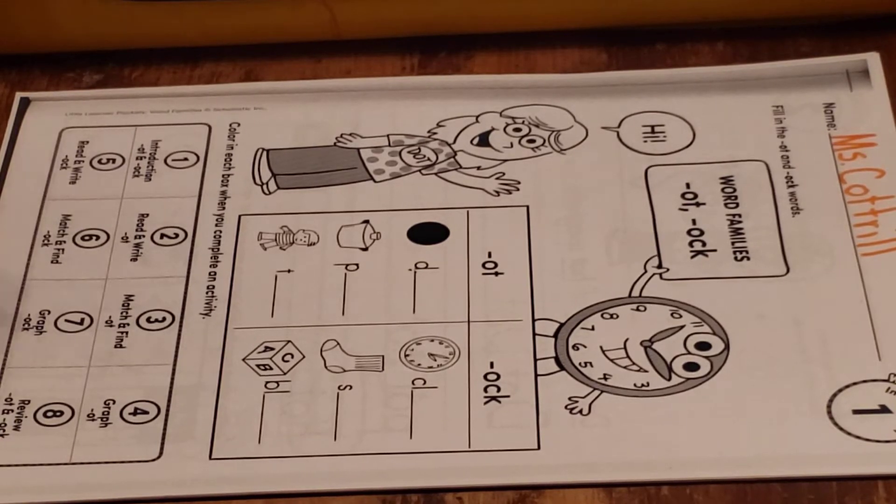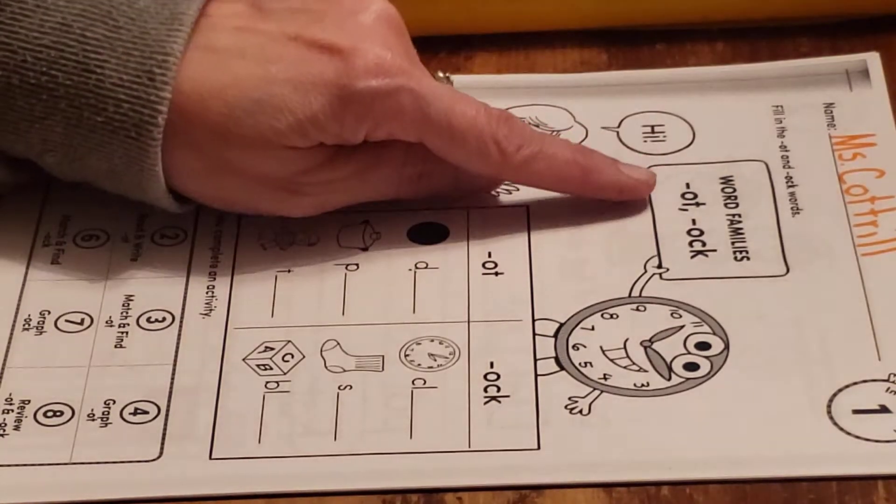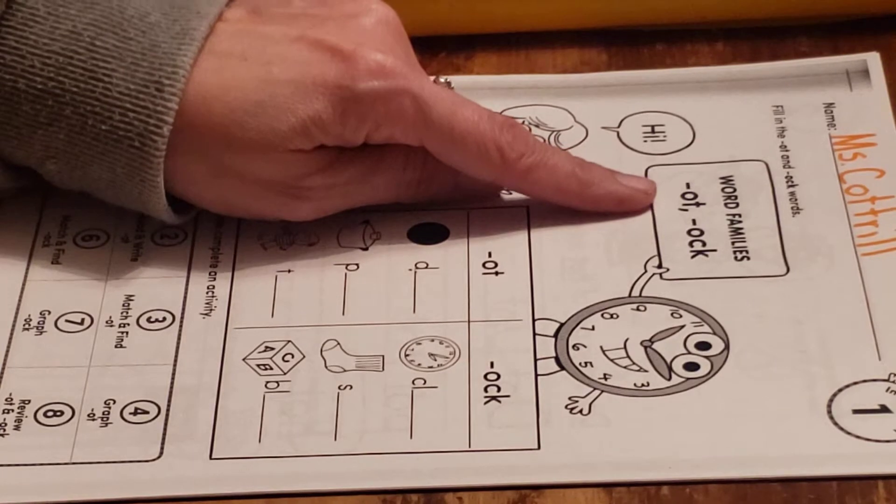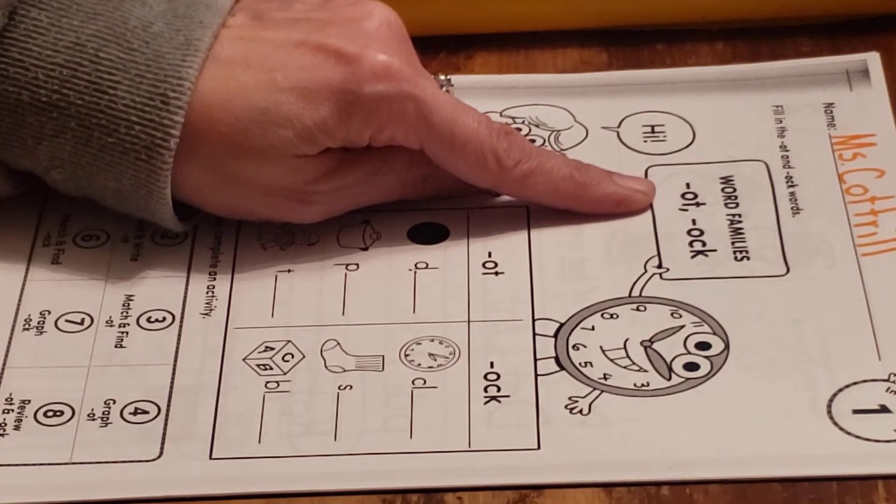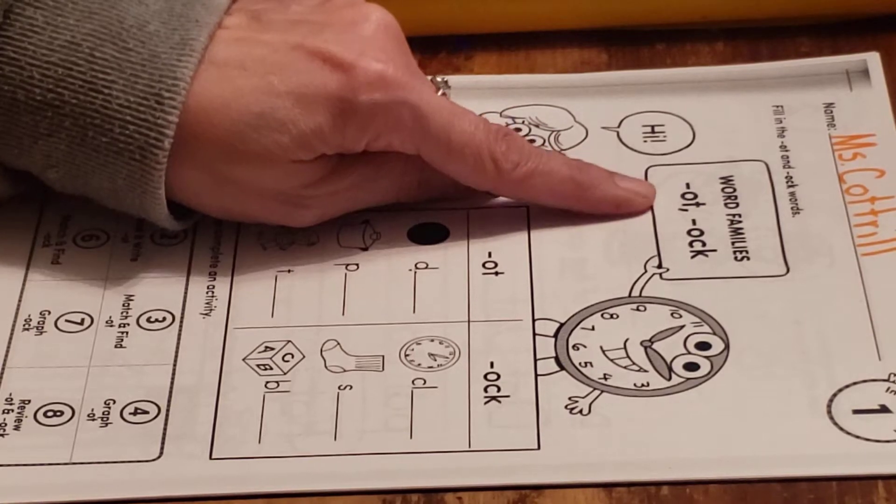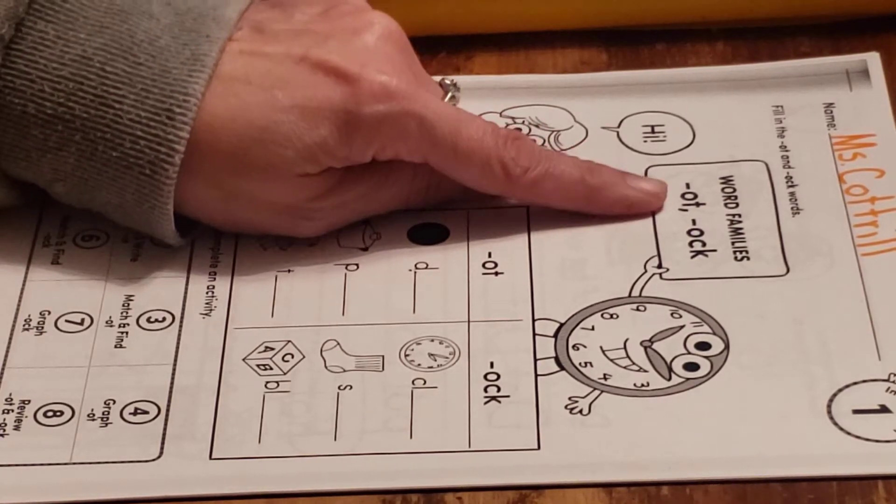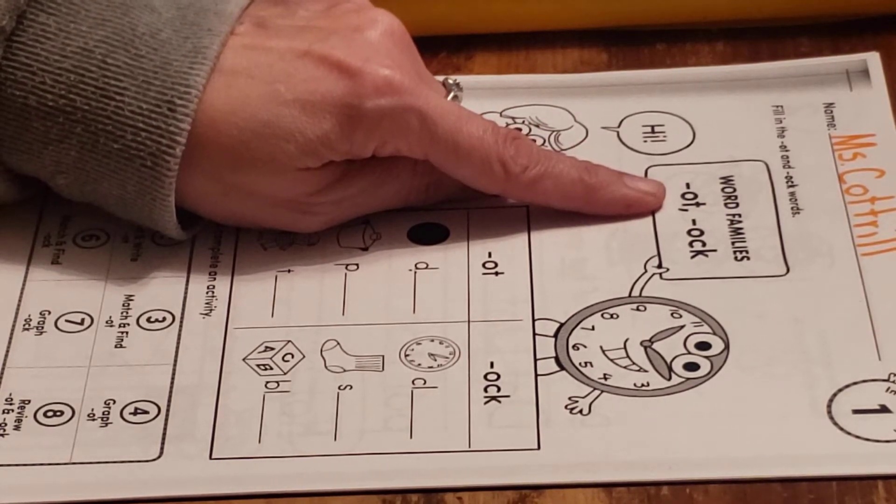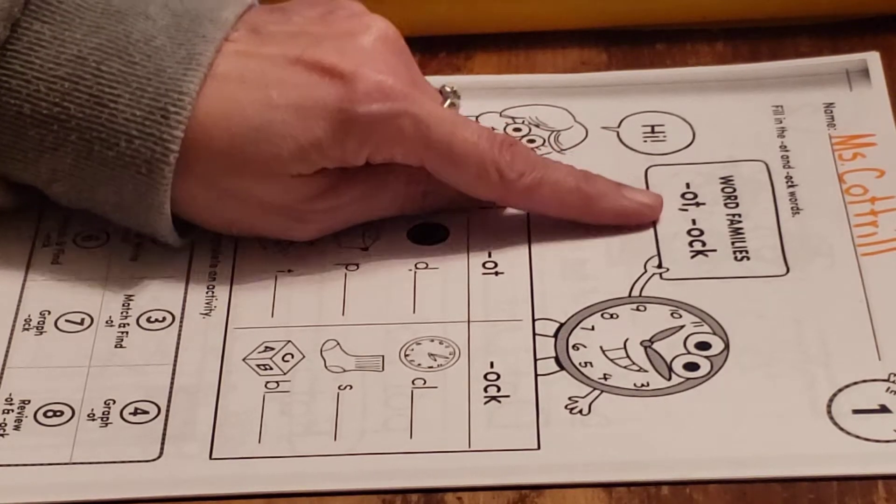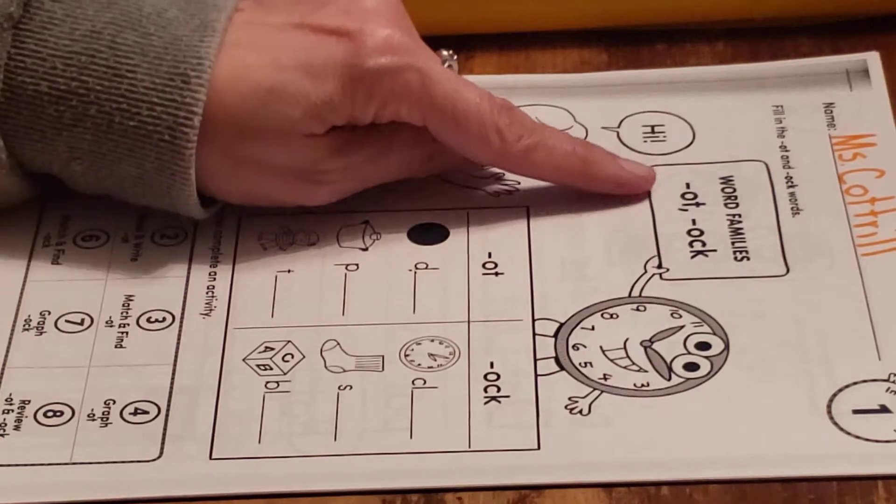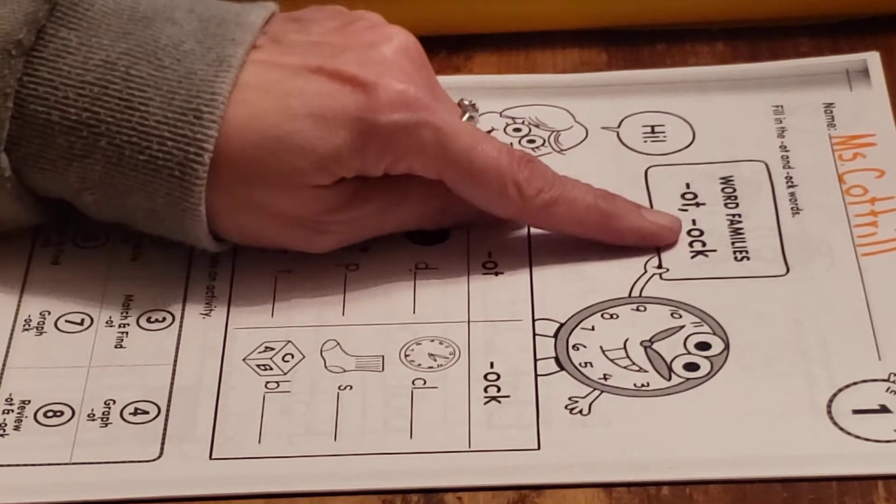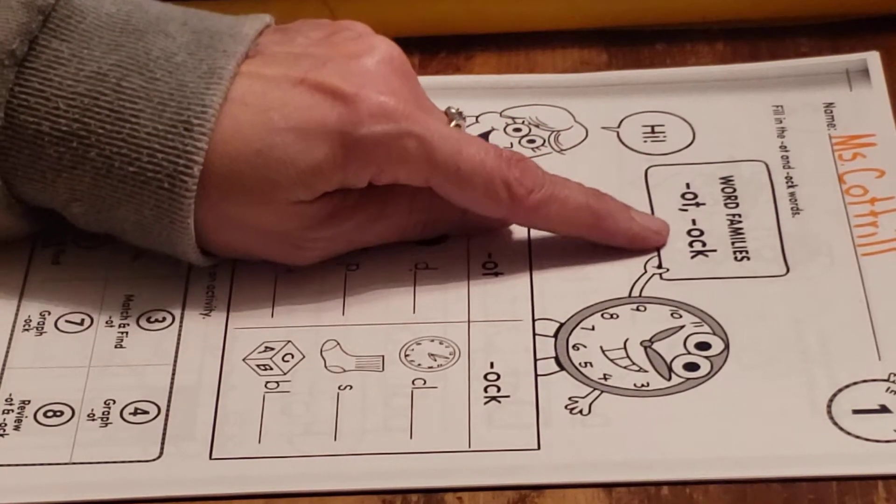When you see these together, I want you to think 'ot', not 'ought' but 'ot'. Every time you see those two letters together, I want you to think 'ot'. Every time you see these three letters together in this order, remember they have to be in this order, I want you to think 'ock'.